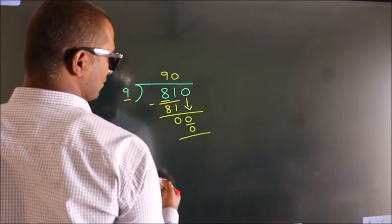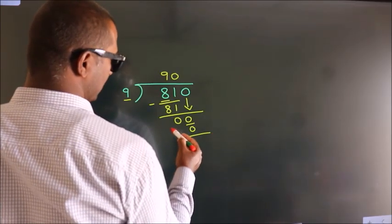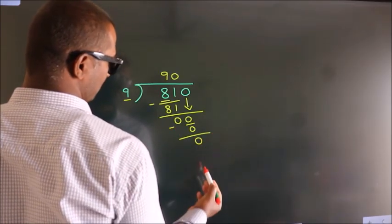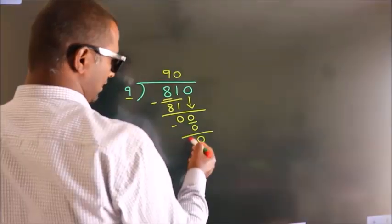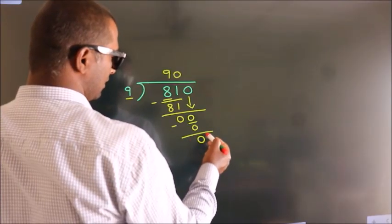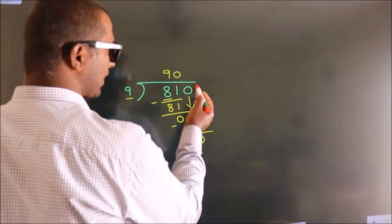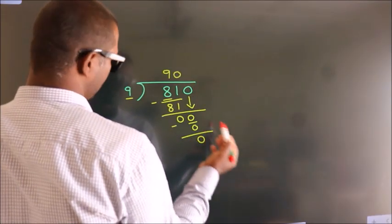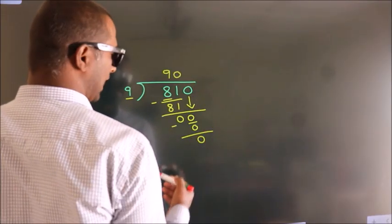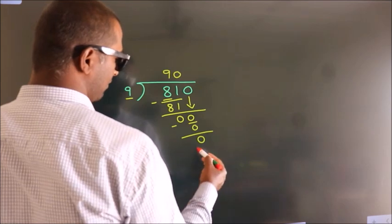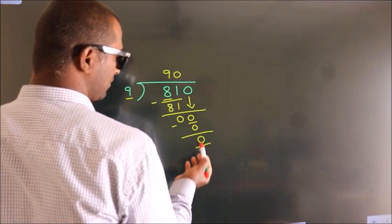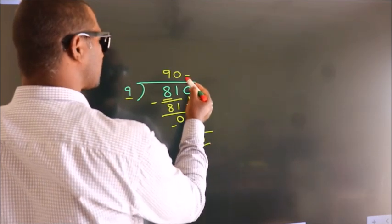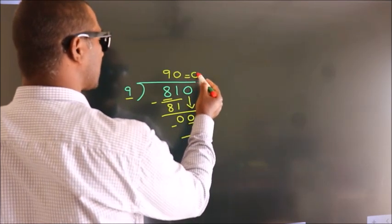Now we subtract, we get 0. After this, no more numbers to bring down. We got remainder 0, so this is our quotient.